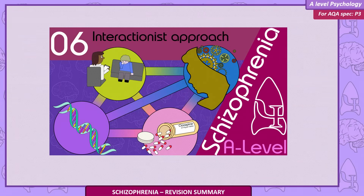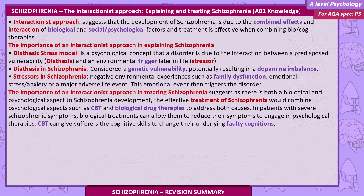The interactionist approach to explaining and treating schizophrenia suggests that the development of schizophrenia is due to the combined effect and interaction of biological and social-psychological factors, and that treatment is most effective when combining biological and cognitive therapies. The diathesis-stress model proposes that a disorder is due to the interaction between a predisposed vulnerability — the diathesis — and an environmental trigger later in life.